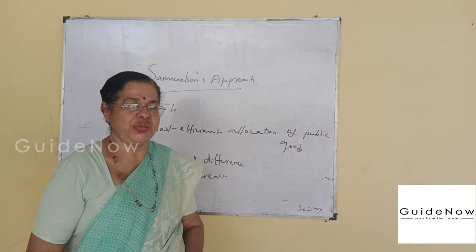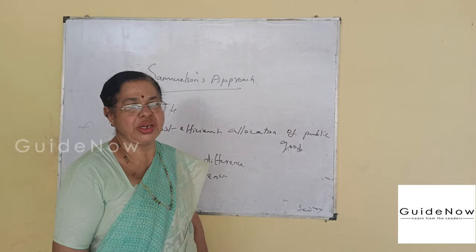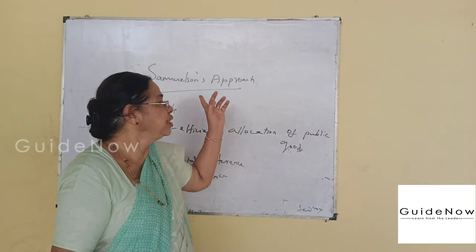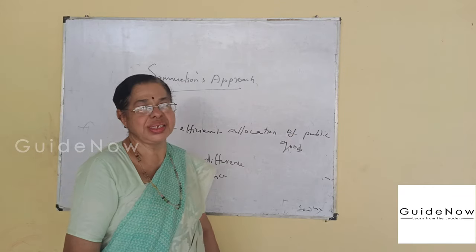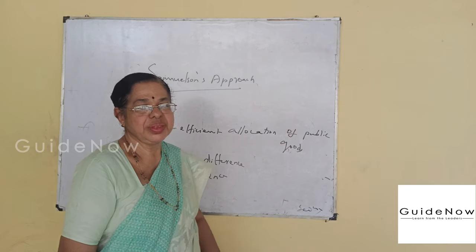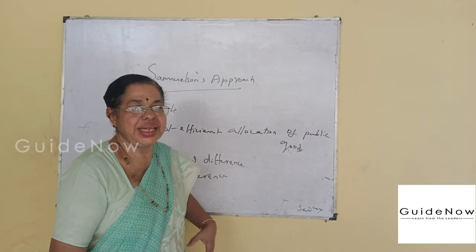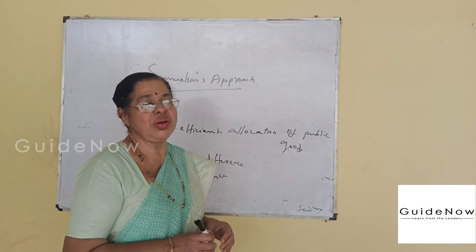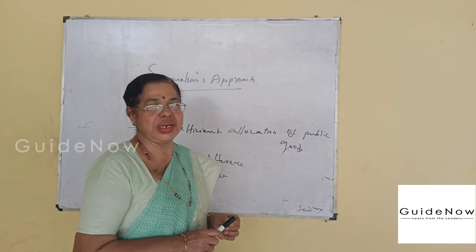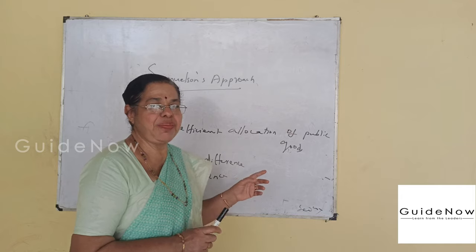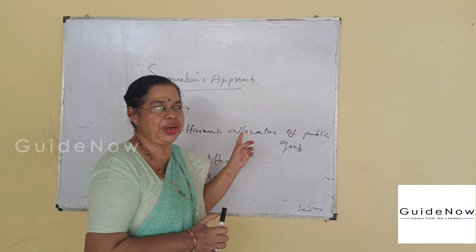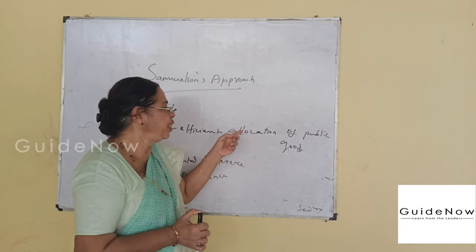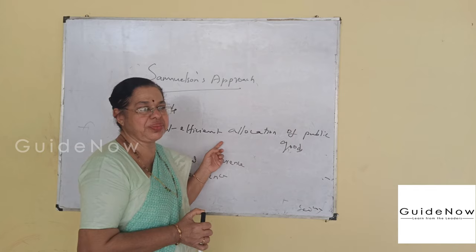This is the last part of the Pure Theory of Public Expenditure, that is Samuelson's approach. In the year 1954, Paul Samuelson published a paper known as the Pure Theory of Public Expenditure.